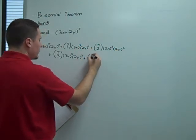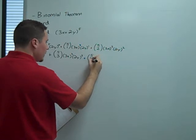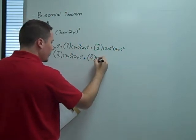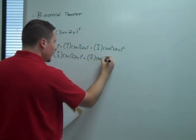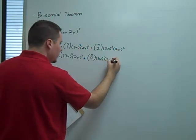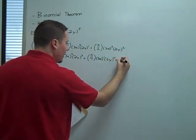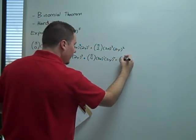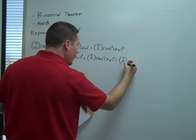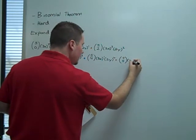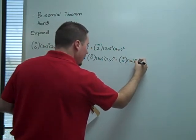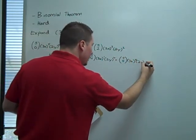Okay, next term is going to be 5 choose 4, 3x to the first, 2y to the fourth, and finally 5 choose 5, 3x to the 0, and 2y to the fifth.